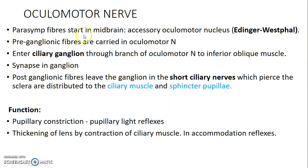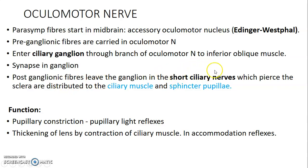Starting with the oculomotor nerve, the third cranial nerve, which carries parasympathetic fibers originating in the midbrain. The parasympathetic nucleus is the accessory oculomotor nucleus, called the Edinger-Westphal nucleus. From this nucleus, preganglionic fibers travel within the oculomotor nerve to the ciliary ganglion, where they synapse with postganglionic neurons. The postganglionic fibers leave through the short ciliary nerves.